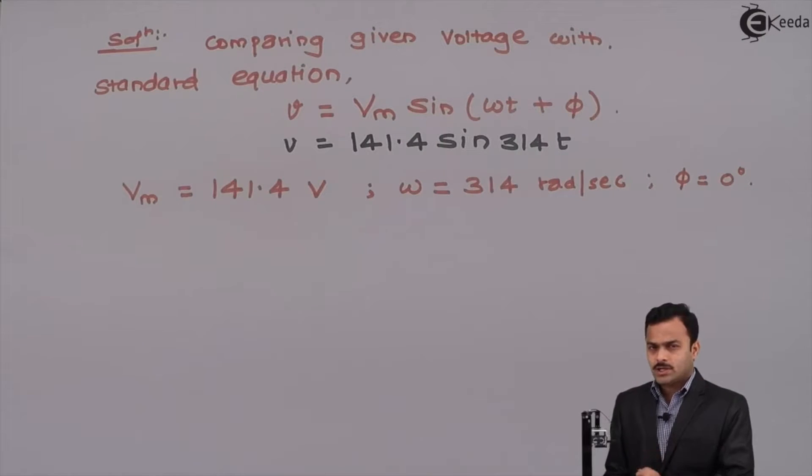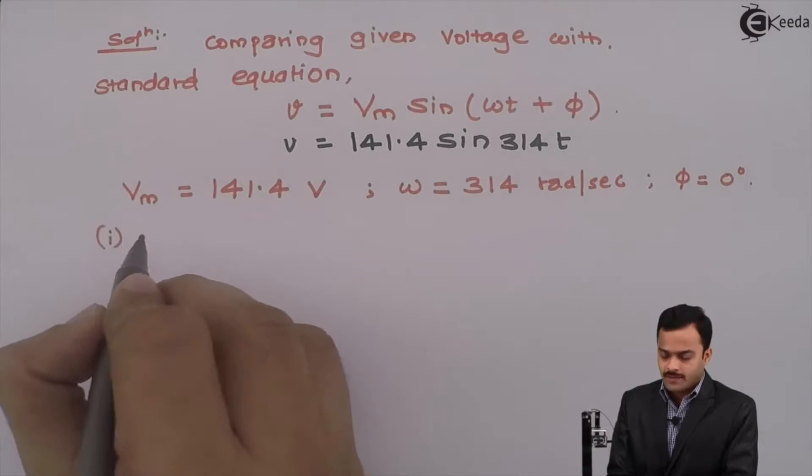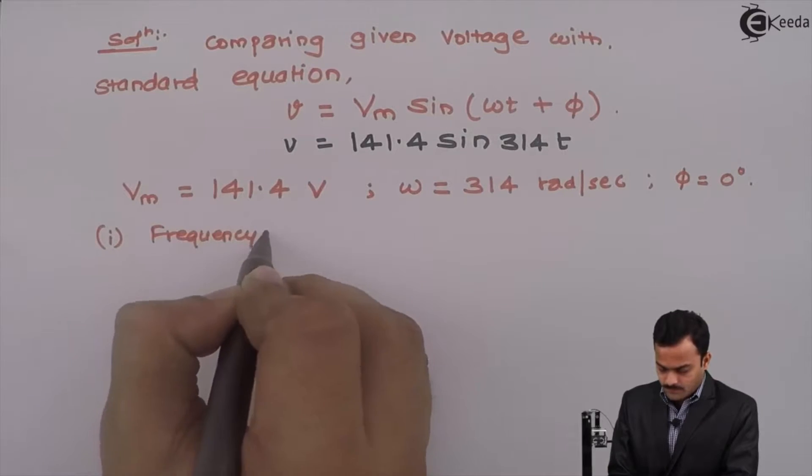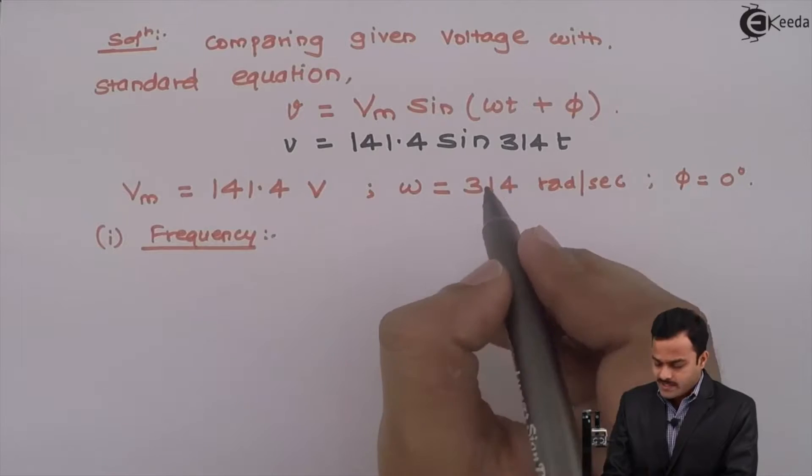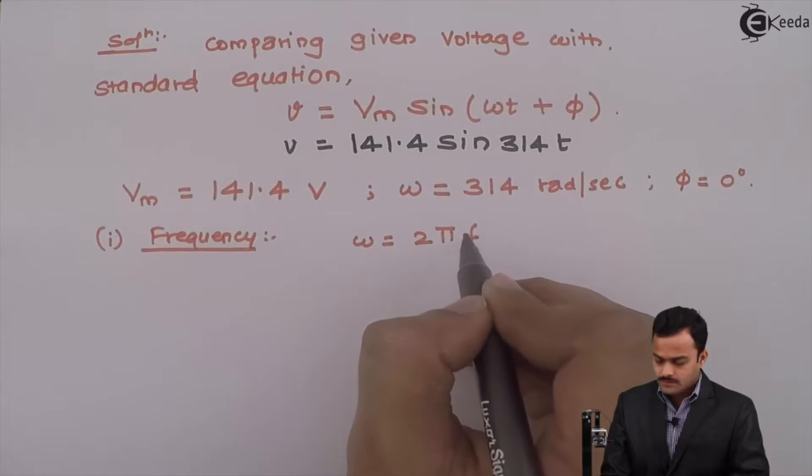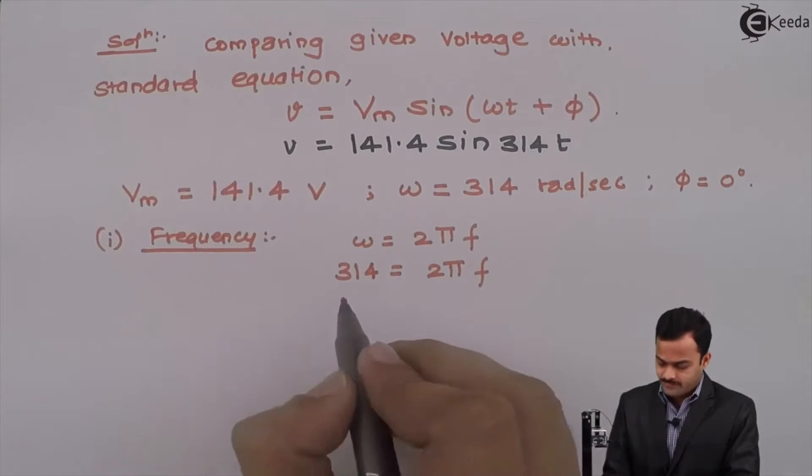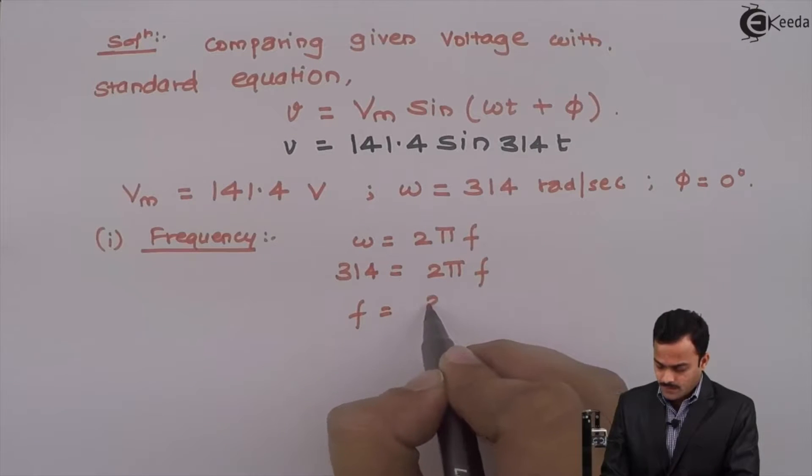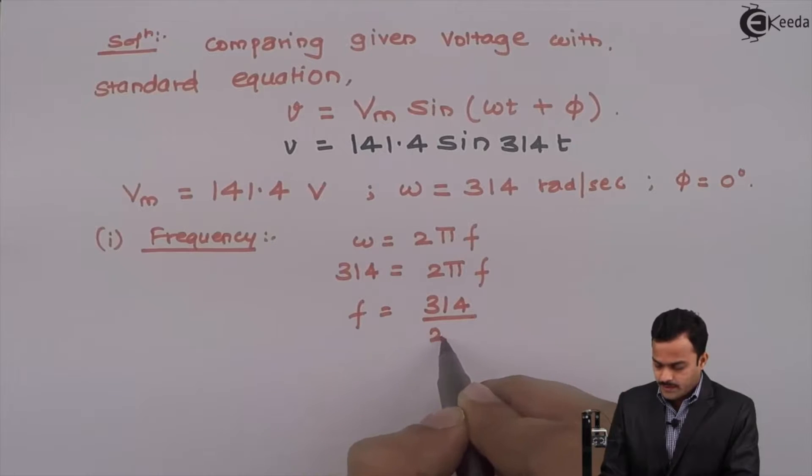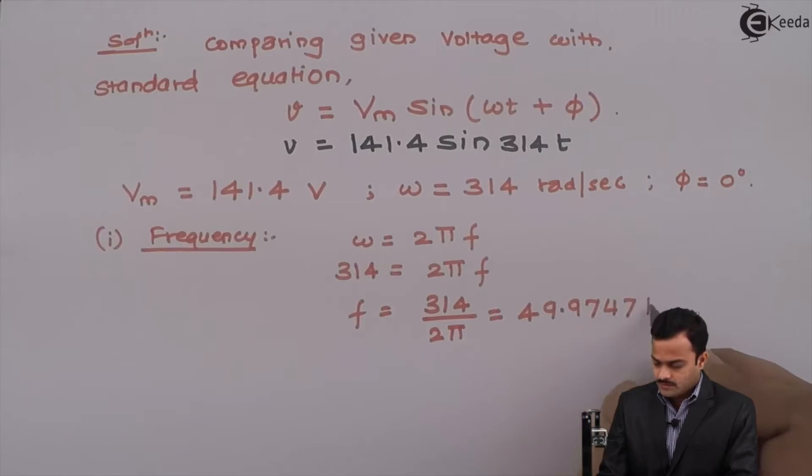Now once we got this, rest of the parameters will be very easy. First, how to get a frequency? Omega is angular frequency given by 2 pi f. I know it is 314, the unknown is f. So f is 314 divided by 2 pi. If I solve, I will get frequency as 49.9747 hertz.